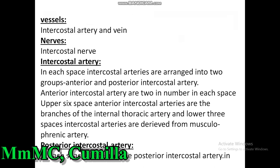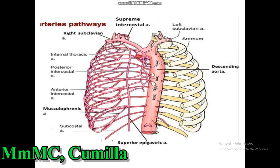Intercostal arteries are two in number in each space. In the upper six spaces the anterior intercostal arteries are derived from the internal thoracic artery, and in the lower six spaces they are derived from the musculophrenic artery. For posterior intercostal arteries, in each space there is one posterior intercostal artery. In the upper two spaces the posterior intercostal arteries are branches of the superior intercostal artery, which is derived from the costocervical trunk, a branch of the subclavian artery. In the lower nine spaces the posterior intercostal arteries are branches of the descending thoracic aorta.